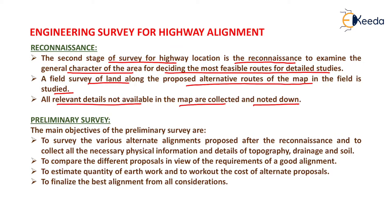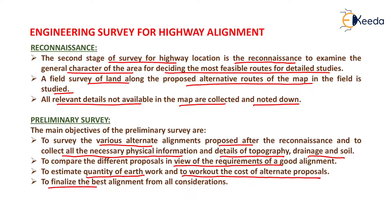The next type of survey is the preliminary survey. The main objectives of the preliminary survey are: to survey the various alternate alignments proposed after the reconnaissance, to collect all necessary physical information and details of topography, drainage and soil, to compare the different proposals in view of the requirements of a good alignment, to estimate quantity of earthwork, and to work out the cost of alternate proposals to finalize the best alignment. In preliminary survey, topographic features, change survey, leveling work, traffic survey, drainage study, soil investigation, etc. are done and alignments are finalized by considering the cost of that particular alignment as well as its maximum utilization.